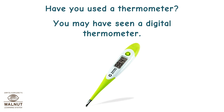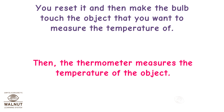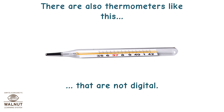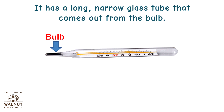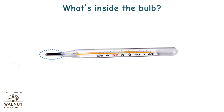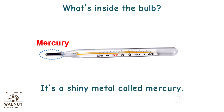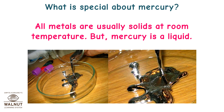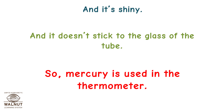Have you used a thermometer? You may have seen a digital thermometer. You reset it and then make the bulb touch the object that you want to measure the temperature of. There are also thermometers that are not digital. They have a long narrow glass tube that comes out from the bulb. What's inside the bulb? It's a shiny metal called mercury. All metals are usually solids at room temperature, but mercury is a liquid. It's shiny and it doesn't stick to the glass of the tube.